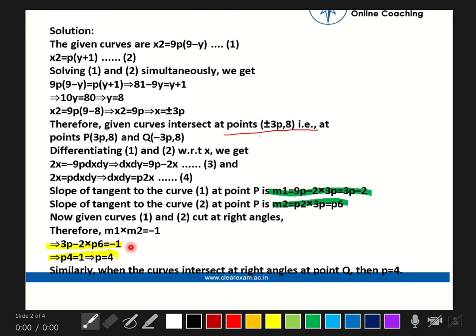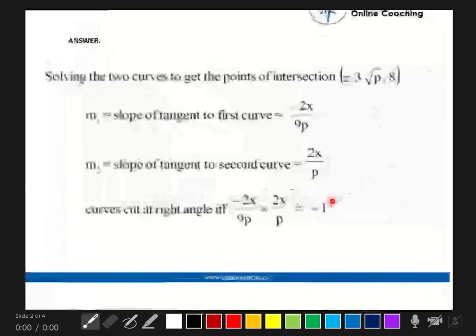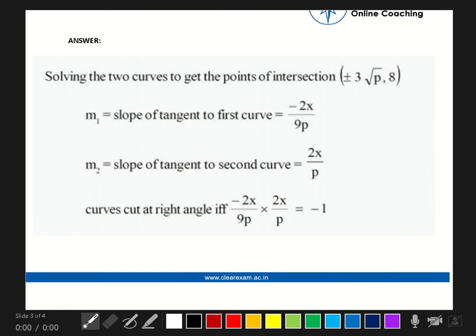Now from this, by solving this equation, P will equal 4. Similarly, when the curves intersect at right angle at point Q, then P = 4. This is the direct solution, you can also check this.